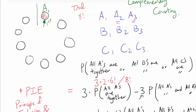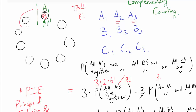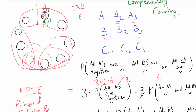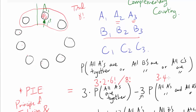For all A's and all B's together: there are 3 ways to place the group of A's. After that, 6 chairs remain for the B group, which can start in 4 different positions among those remaining spots. Within the A group we arrange A2 and A3 in 2 ways, and within the B group we arrange the 3 members in 3 factorial ways. The remaining 3 people can be arranged in 3 factorial ways. Divided by 8 factorial total.